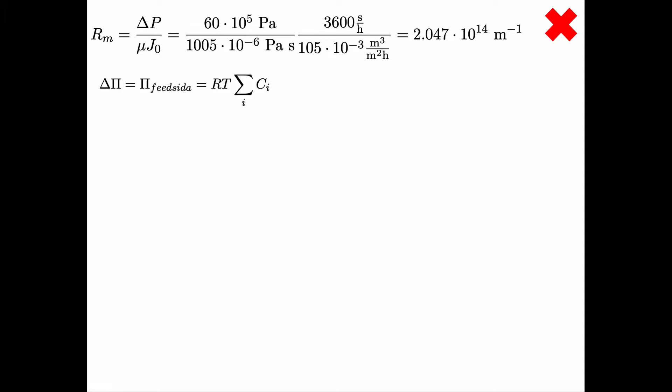Next we calculate the difference in osmotic pressure. Since the retention is 100 percent there is no concentration in the permeate so the osmotic pressure in the permeate is zero. So the delta π simply becomes the π on the feed side, sorry for the Swedish there, but this is taken from a Swedish lecture.